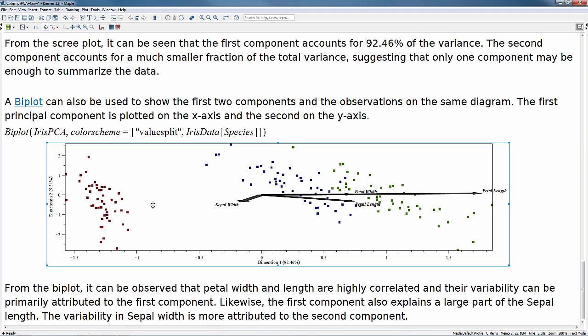The summary from the biplot is we can observe that petal width and petal length are highly correlated, and their variability can be primarily attributed to the first component. Likewise, the first component also explains a large part of the sepal length. However, the variability in sepal width is more attributable to the second component.